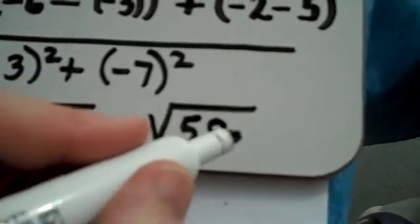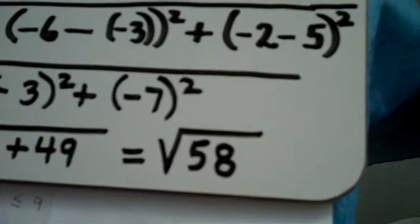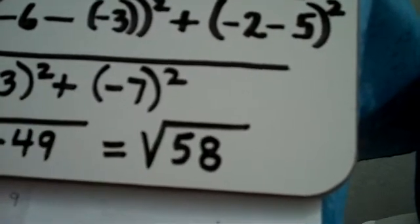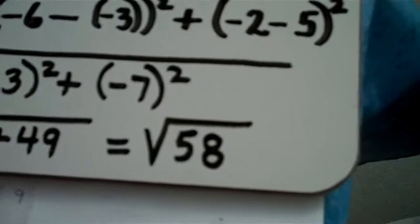Now, what you look for whenever your answer has a square root in it is you look to see if there's a way to simplify this further. But 58 does not have any perfect squares that come out of it.